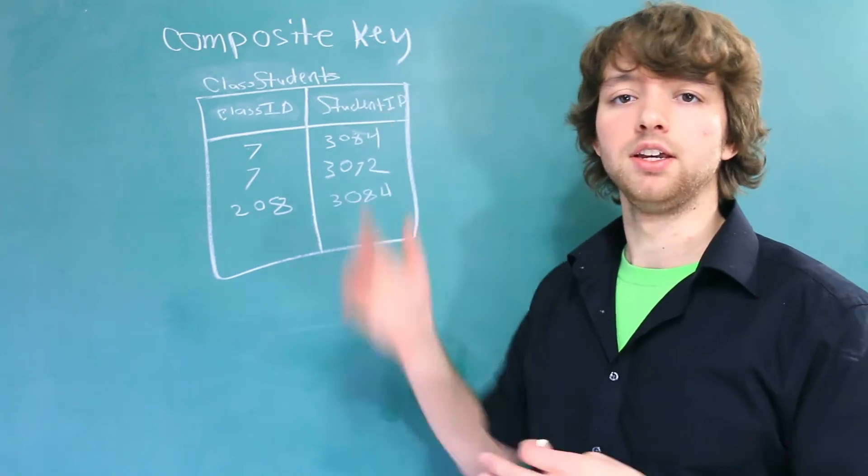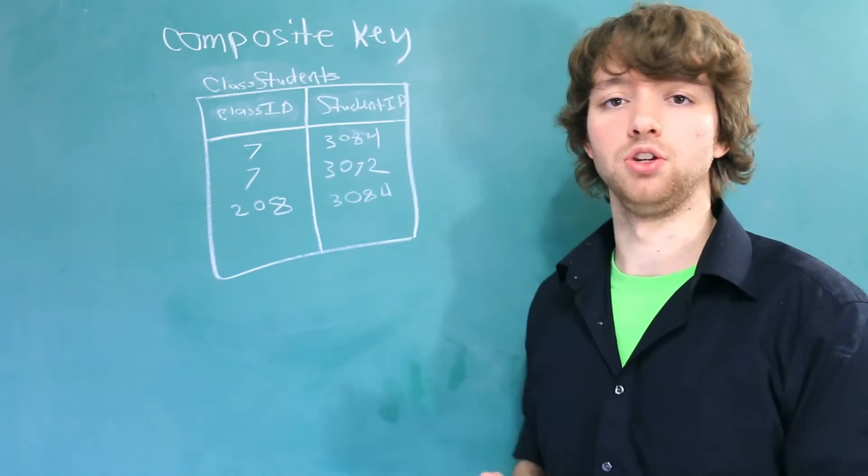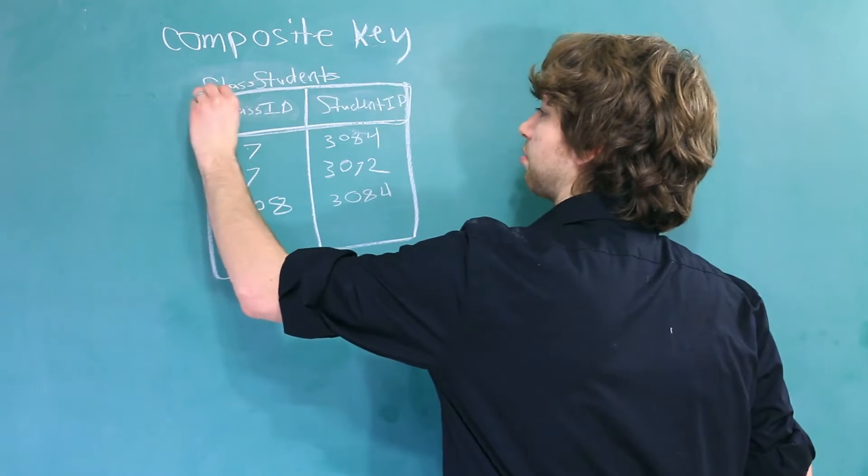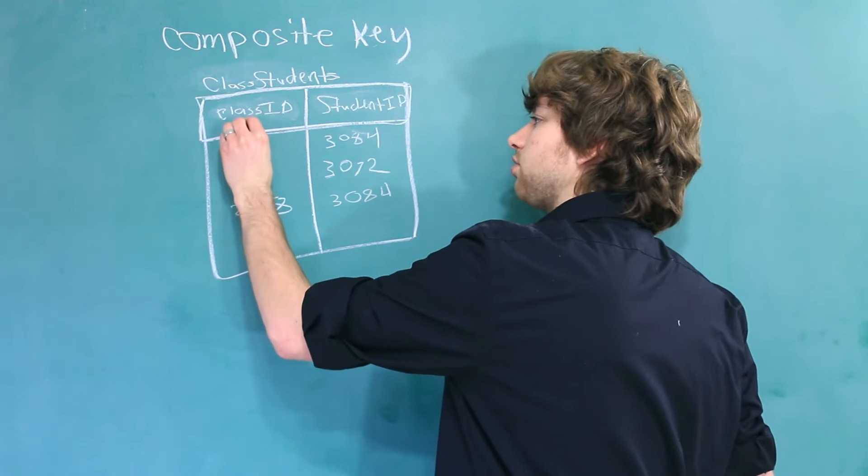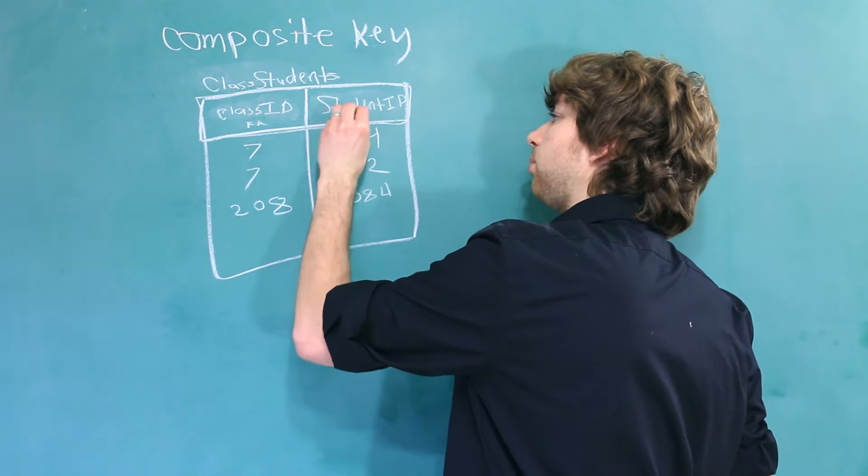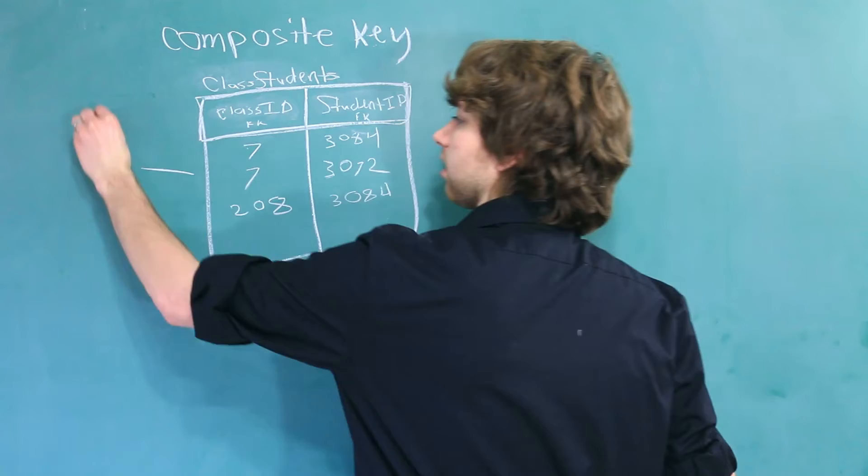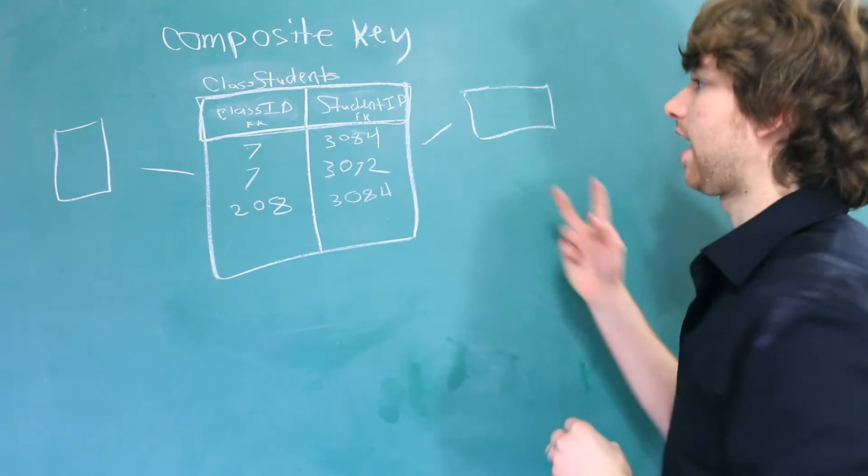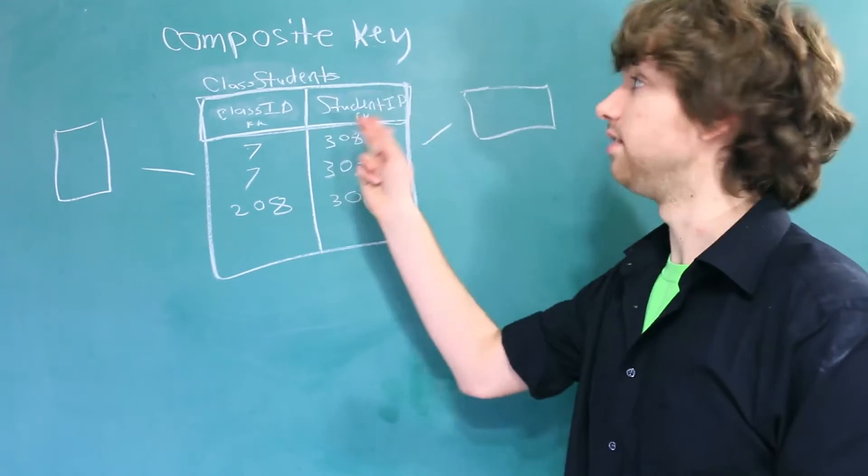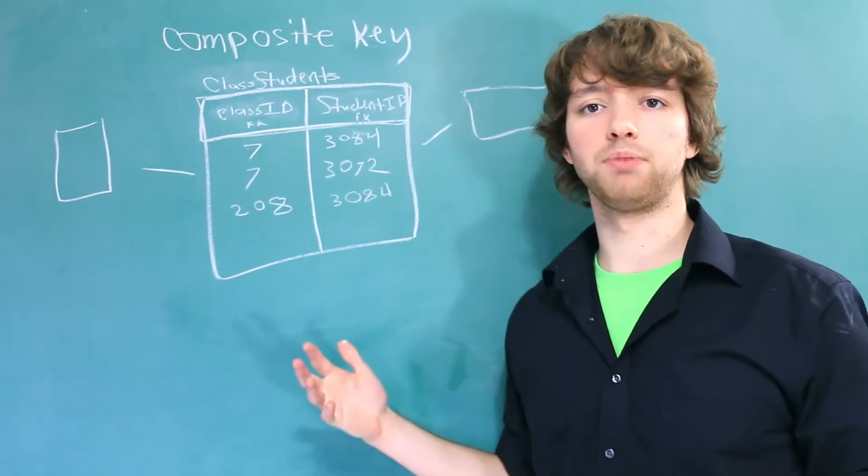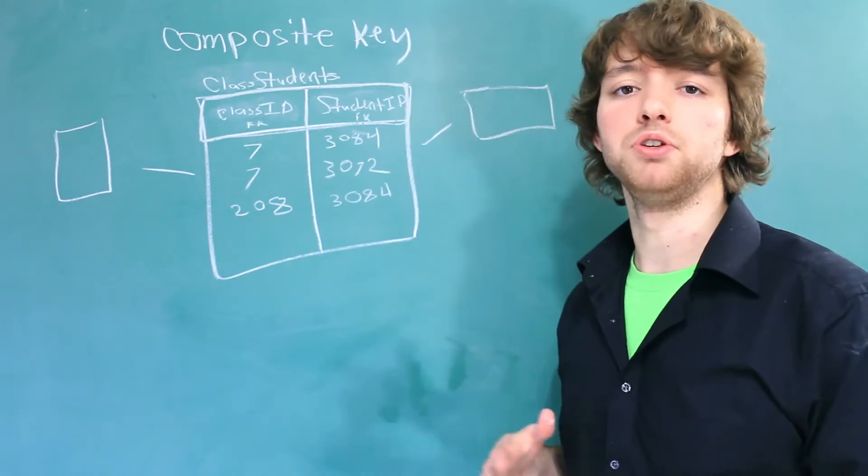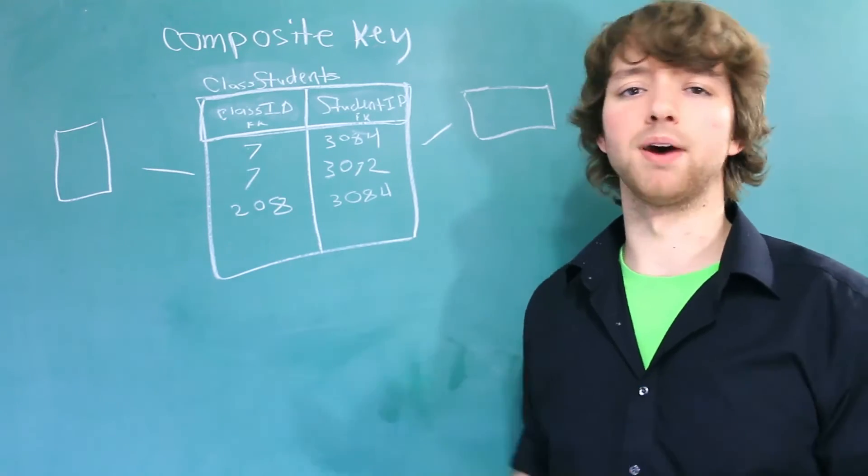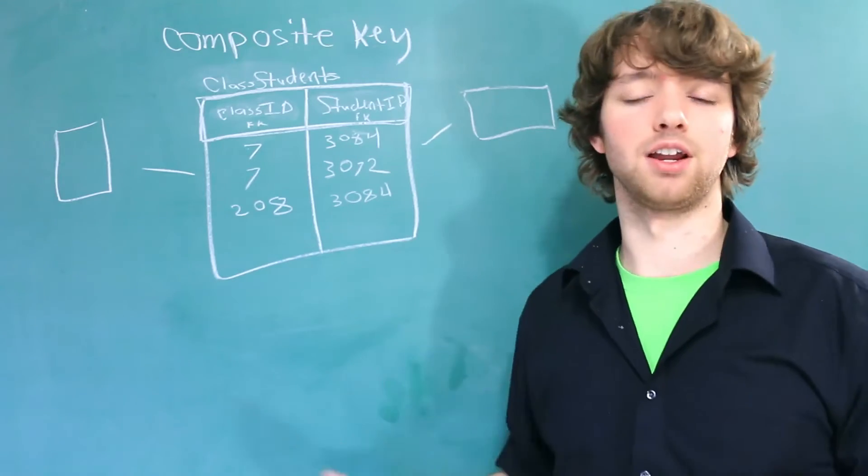In this situation, a composite key is actually a really good thing we could use. Essentially, we're going to combine these two columns as the primary key. Now these are actually going to be foreign keys pointing to different tables, so we'll probably have a class table and a student table. And when we have two keys inside of a composite key, it's actually known as a compound key. But often people will use the terms composite, compound, interchangeably, so don't worry about it too much, but I just thought I'd let you guys know that.